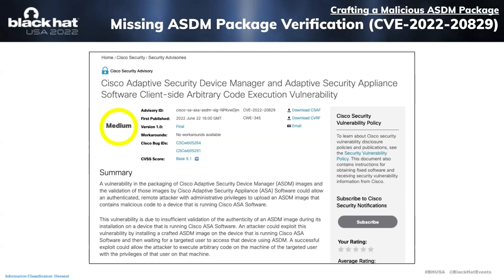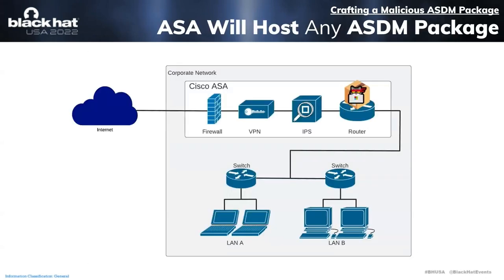We reported this issue to Cisco back in February of this year, and Cisco released an advisory in June, but again without a patch. I believe a patch was also released today, but I haven't had a chance to verify it. This advisory covers exactly what we discussed: attackers can upload malicious ASDM packages to the ASA, which can result in code execution on hosts connecting to the router. The only question that remains is how exactly HackerCat crafts this malicious package.